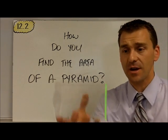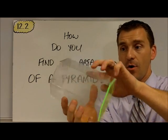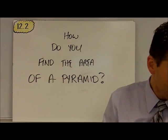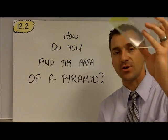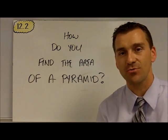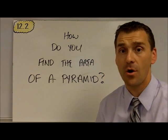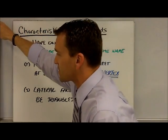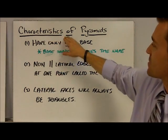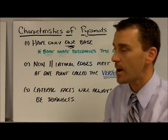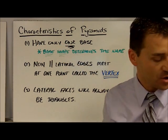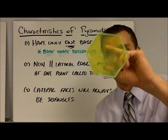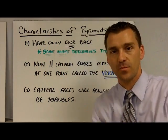Remember this. These guys here were prisms. They had two bases and they had all these lateral faces. That was a prism. This is a square prism, hexagonal prism, and a triangular prism, if you will. The difference: prism has two bases, and this particular pyramid right here only has one. Two bases in a prism, one base in a pyramid.